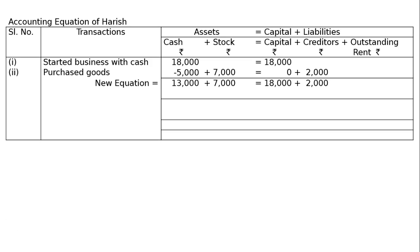Third transaction: sold goods for cash ₹4,000, costing ₹2,400. The cost goes out from stock as minus ₹2,400, cash comes in by plus ₹4,000, and this gives rise to a profit of ₹1,600, which is added to capital. Stock is reduced by ₹2,400 and our profit is ₹1,600. We add these to find the new equation.